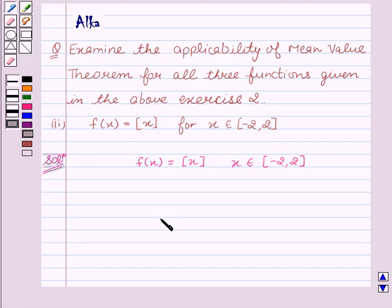Now, let us check the continuity of the given function. So, for then, limit x approaching to 0 from RHS f(x) equal to limit x approaching to 0 from RHS greatest integer of x equal to 0, that is minus 2 is less than equal to 0 is less than equal to 2.